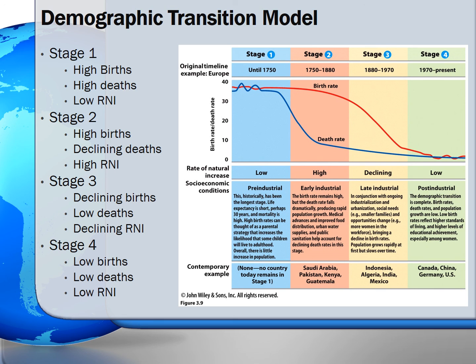In the third stage, or late industrialization, the rate of natural increase is declining due to birth rates dropping while death rates are already low. As the society becomes industrialized, many children are no longer needed, and they aren't dying as young as before, so many do reach adulthood. In the fourth stage, or completion of the demographic transition, a country reaches post-industrialization, where birth rates, death rates, and the RNI are all low.